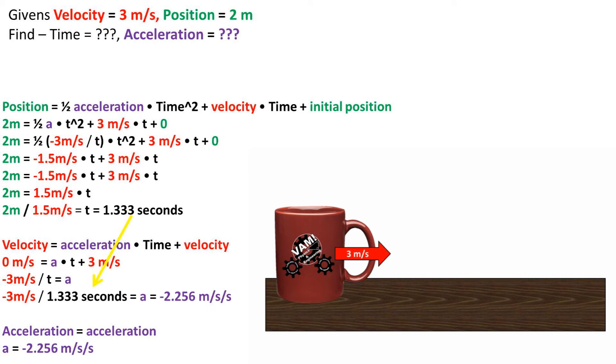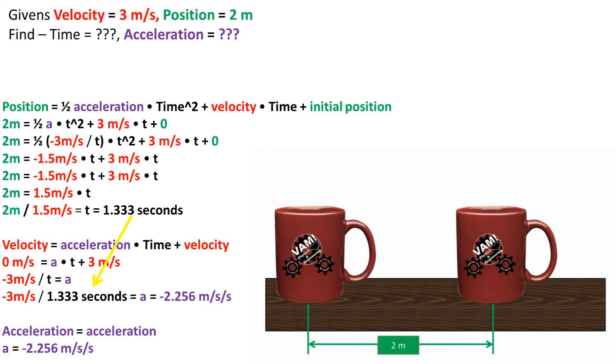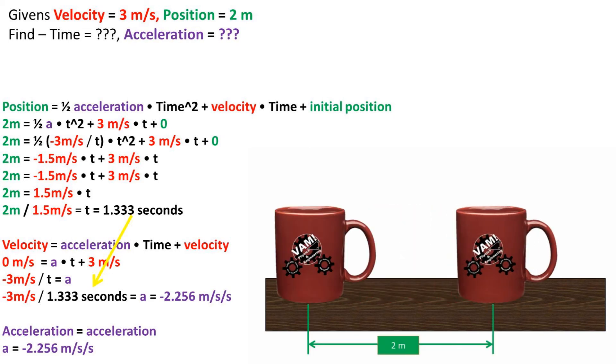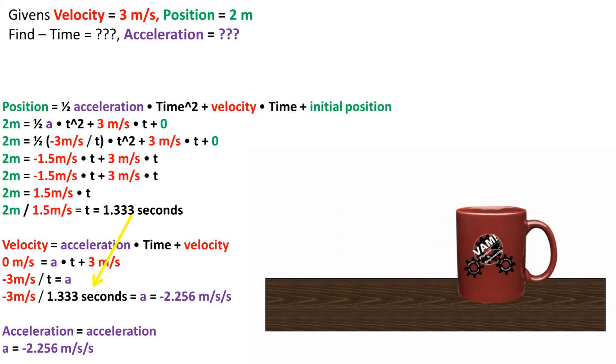To finish off this problem, we can take the time that we found and plug it into the acceleration formula. We get an acceleration of negative 2.256 meters per second per second. This is negative due to the cup being decelerated or slowed down.